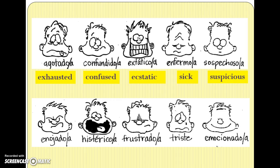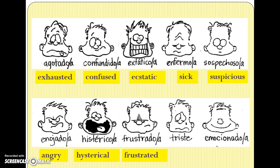In the second row: enojado means angry — it almost looks like 'enjoy,' a false cognate, but maybe you can remember that you enjoy being angry. Histérico is definitely a cognate meaning hysterical — note that Spanish uses an I where English uses a Y, and there's an accent over the E. Frustrado is a cognate meaning frustrated. Triste means sad — it's one of the exceptions that doesn't end in O or A, so it's just triste or tristes. And emocionado is a cognate for emotional. Highlight or underline all five.